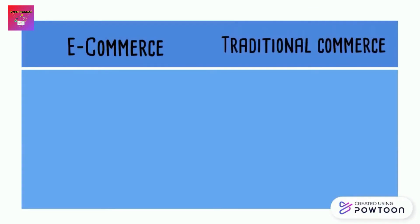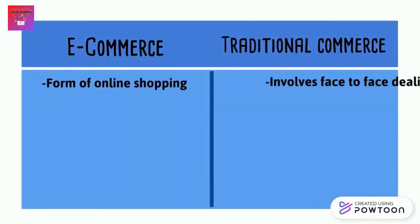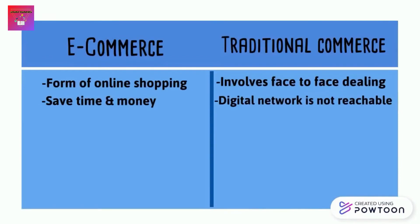Let's look at the differences between e-commerce and traditional commerce. Firstly, e-commerce is a form of online shopping where users can buy goods and services from their electronic devices such as laptop, mobile or tablet. Meanwhile, traditional commerce is a traditional approach to buy goods and services in person, which involves face-to-face dealing. Secondly, e-commerce is used to save valuable time and money, while traditional commerce is ancient and still in usage where digital network is not reachable.